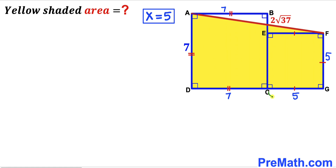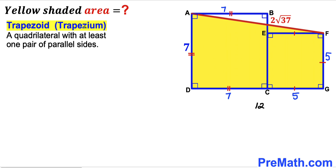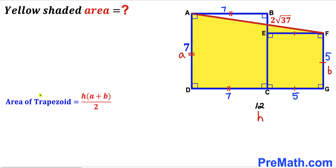So side CG is 5 units and side FG is 5 units. Therefore the whole side DG is 7 + 5 = 12 units. Recalling the definition of a trapezoid — a quadrilateral with at least one pair of parallel sides — we can see the yellow shaded diagram is indeed a trapezoid.